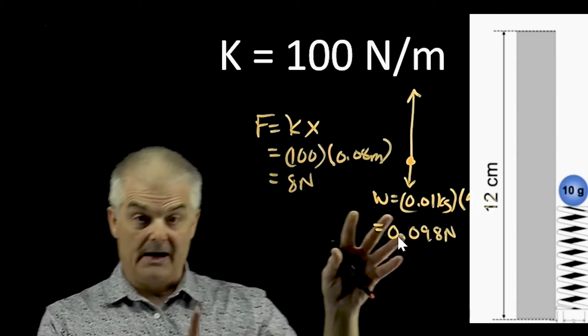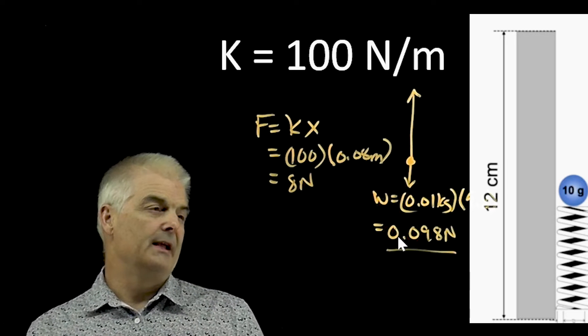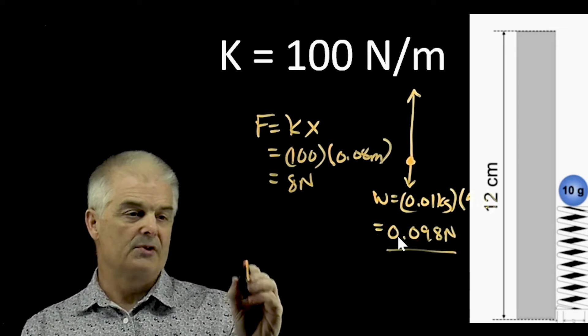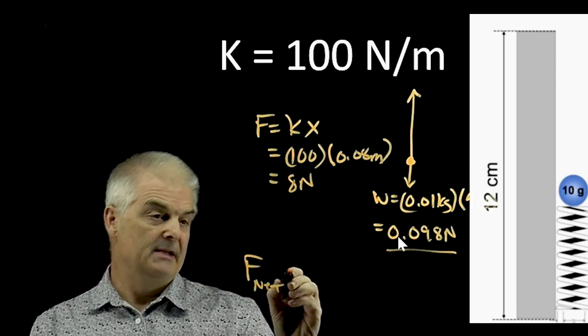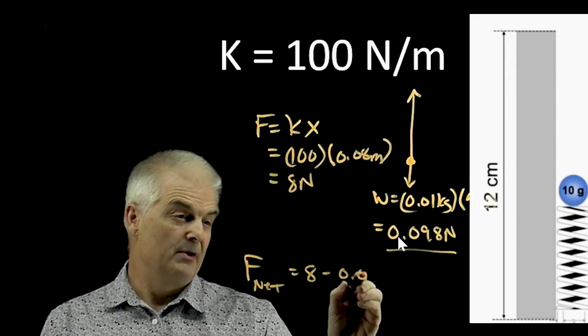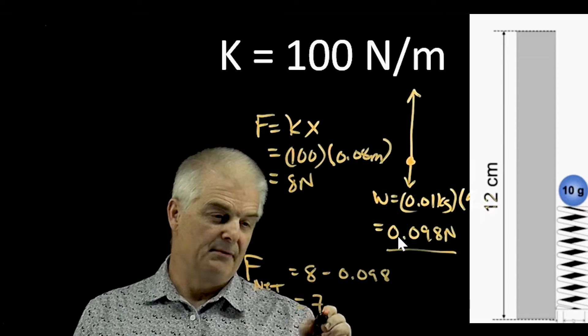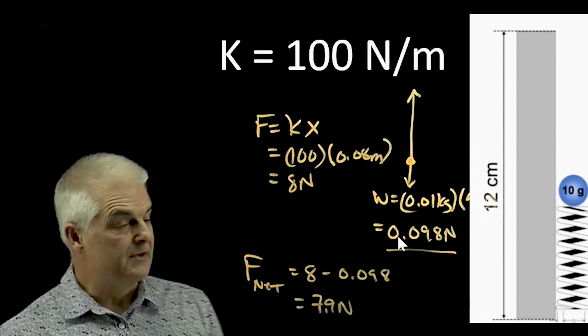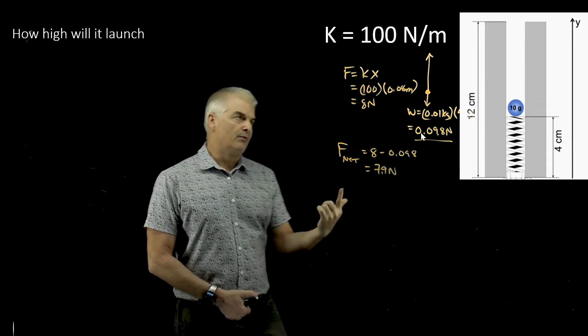So we have an unbalanced force, right? We have an 8 newton force up and a 0.098 newton down, so the net force going up is 8 minus 0.098, which is basically 0.1, so that's going to be 7.9 newtons. So the weight of this object is not a huge factor, so you're going to have a 7.9 newton force going up.